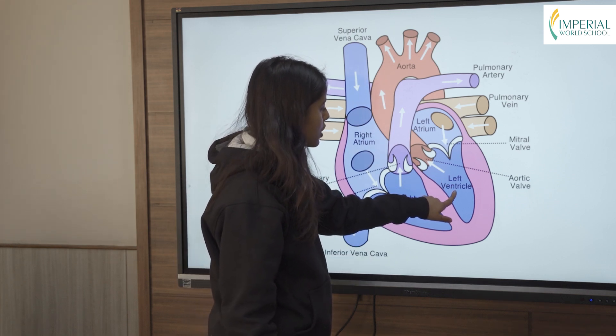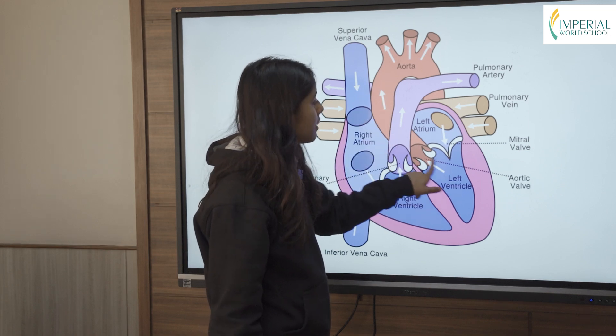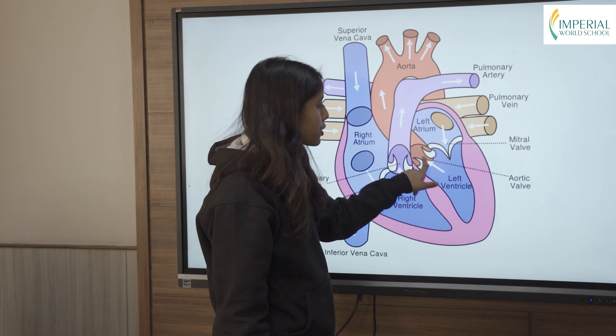Then when the left ventricle contracts, the blood travels from the left ventricle to the aorta and there is an aortic valve present so that there's no backflow of blood.